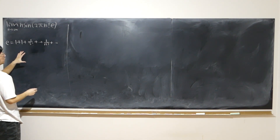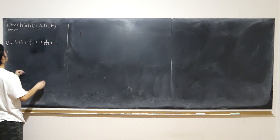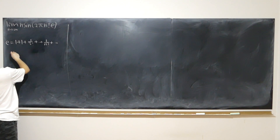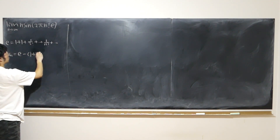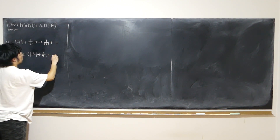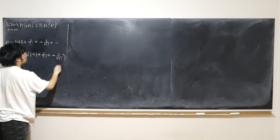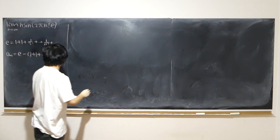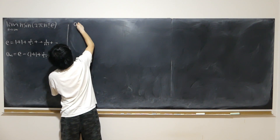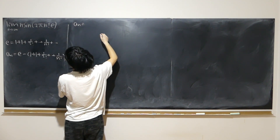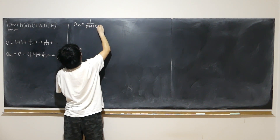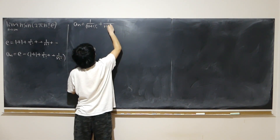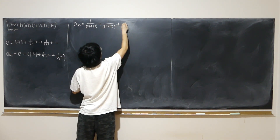The other definition might not be as useful because this definition involves factorial. So I'm going to define aₙ equal to e minus the finite sum 1 plus 1 plus 1 over 2 factorial plus all the way up to 1 over n factorial. So aₙ equals e minus 1 over (n+1) factorial plus 1 over (n+2) factorial, all the way to infinity.